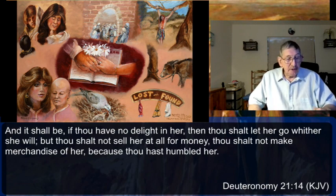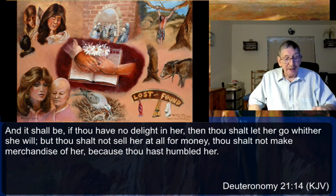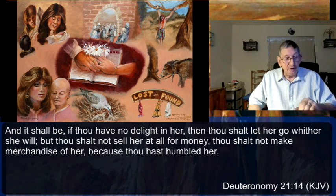The captive woman had to be purified and humbled, denoting a complete break from her past and a willingness to start anew. She shall put the raiment of her captivity off of her — she's going to change clothes — showing a change of allegiance. This showed that the captive woman no longer regarded her former nation and family; now she was a citizen of Israel.